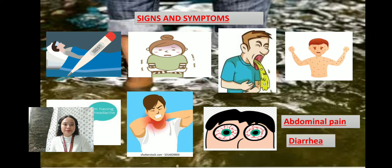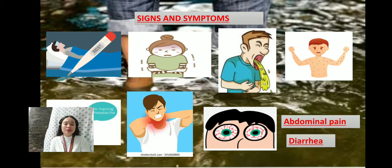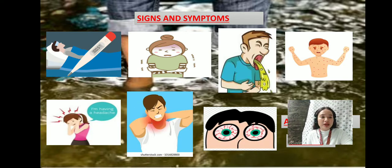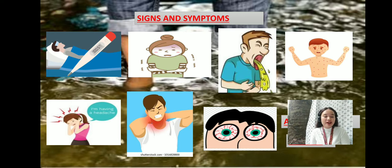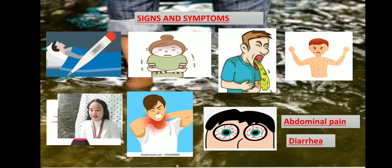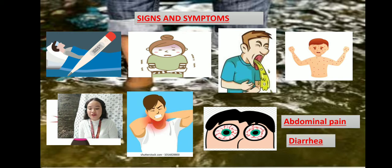Now let us proceed to the signs and symptoms. In humans, leptospirosis can cause a wide range of symptoms. These include: headache, high fever, chills, muscle aches, vomiting, jaundice or yellow skin and eyes, red eyes, abdominal pain, and diarrhea. Those are the signs and symptoms if you are having leptospirosis.